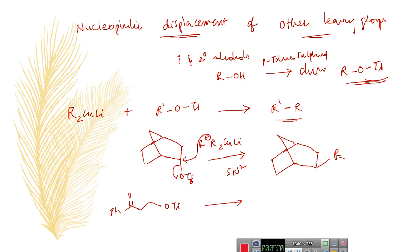Another example: a substrate having a good leaving group, that is tosylate, is treated with Gilman's reagent. The Gilman's reagent has a methyl nucleophile which attacks onto the electrophilic carbon, giving a substituted product. This kind of substitution reaction can be observed wherever tosylates, which are good leaving groups, are present in the substrates.